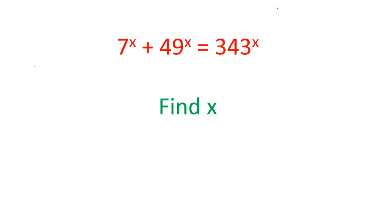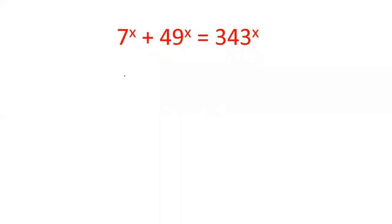Let's try to solve this question. 7 power x, 49 can be written as 7 power 2, power x. 343 is 7 power 3, power x. So 7 power x, 7 power x squared is 7 power x cubed.